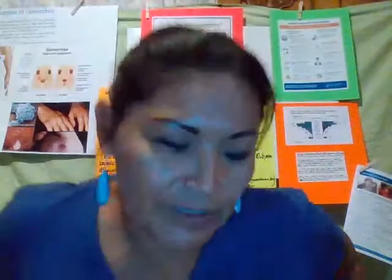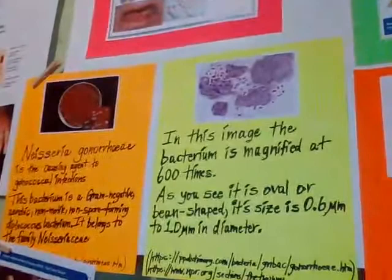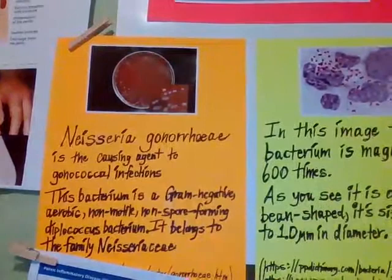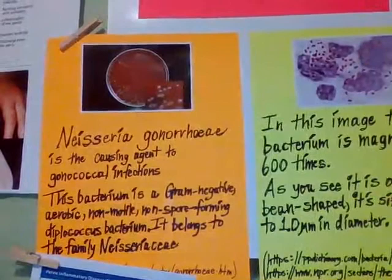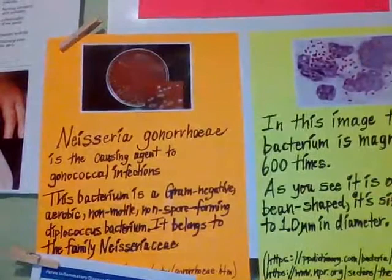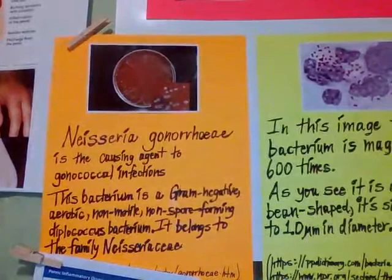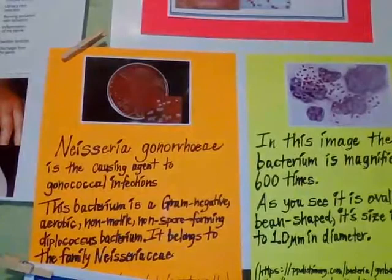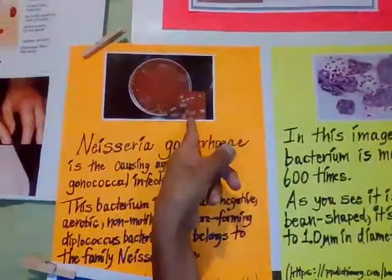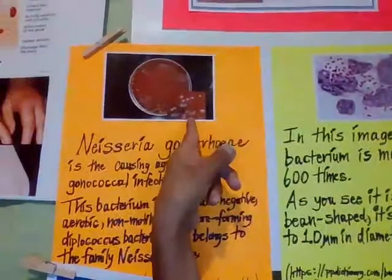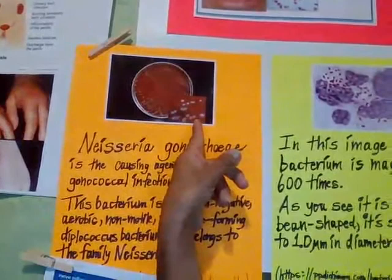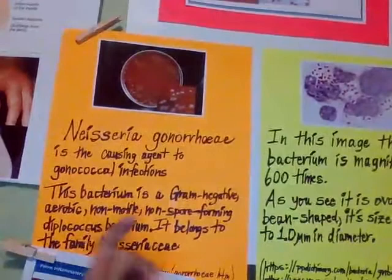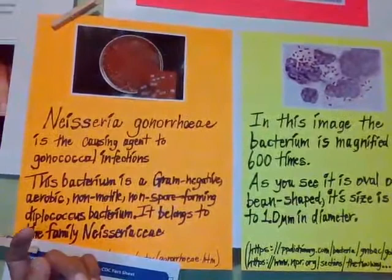This is a picture of Neisseria gonorrhea. It is the causing agent of the gonococcal infections. This bacteria is gram negative, non-motile, non-sporing, and it's a diplococcus bacterium. It belongs to the family Neisseriaceae — that's the Latin term for this family. Concerning how it grows, it grows in a circular shape — like dip dots — that's why they call it a diplococcus. It's like a dip and it's coccus, meaning circular and round. It's gram negative, which means it's a bacteria that's pretty hard to treat.